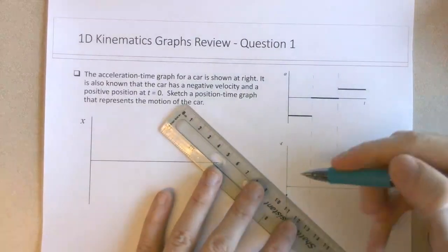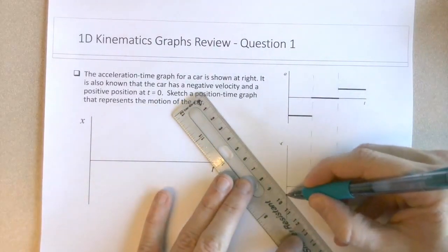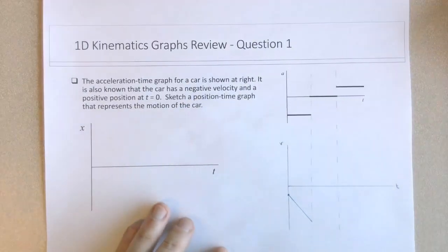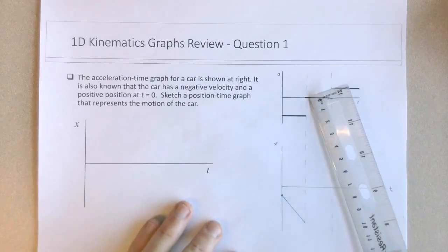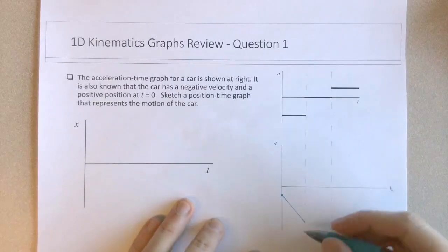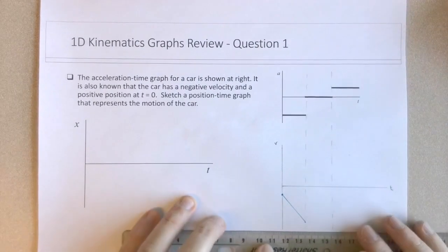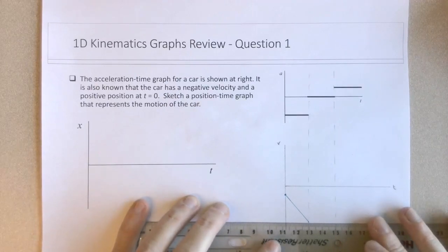So I'll draw in a somewhat steep curve here. And then it has no acceleration. So whatever velocity it ends at this particular point, it needs to remain at that velocity for this next time interval where the acceleration is zero.